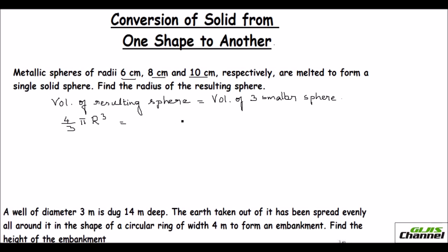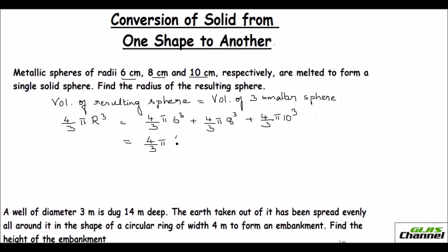The sum of the three volumes is (4/3)π(6³) + (4/3)π(8³) + (4/3)π(10³). I can take the common terms (4/3) and π out, leaving R³ = 6³ + 8³ + 10³.